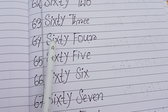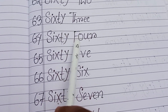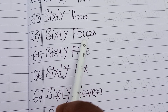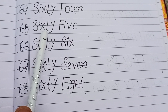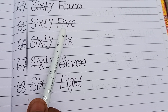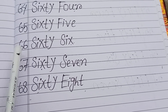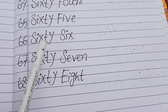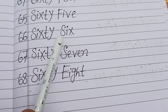Sixty-four: S, I, X, T, Y, F, O, U, R. Four. Sixty-four. Sixty-five: S, I, X, T, Y, F, I, V, E. Five. Sixty-five. Sixty-six: S, I, X, T, Y, S, I, X. Six. Sixty-six.